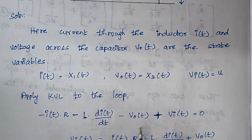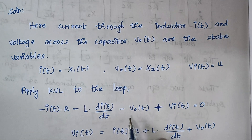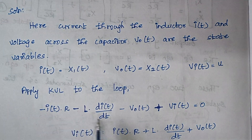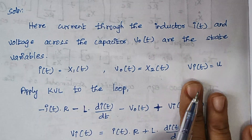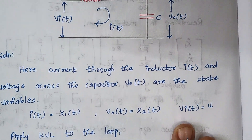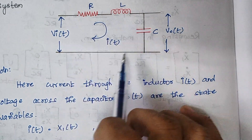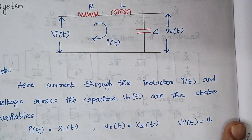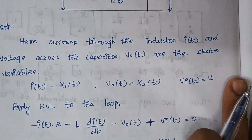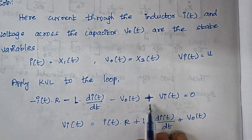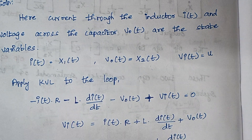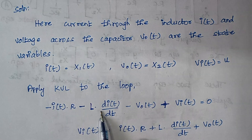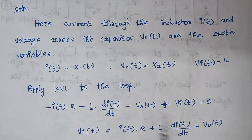Since the voltage across the capacitor is V0(t), we take V0(t) directly. These are all the voltage drops, so we include a minus sign. There is also an input voltage source, which is taken with a plus sign: +Vi(t) = 0. Now we are rearranging this expression.